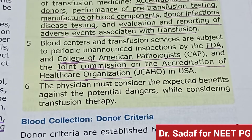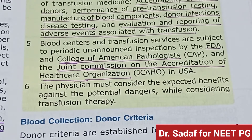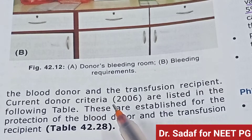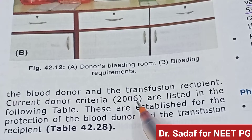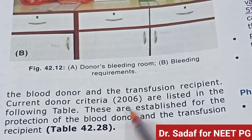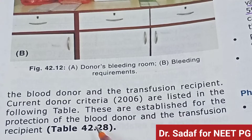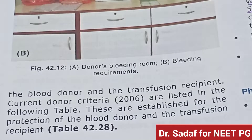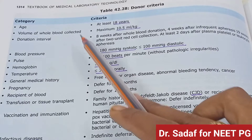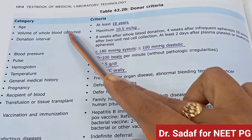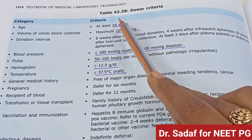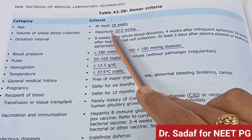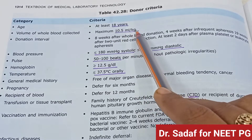Blood collection and donor criteria are established for the protection of the blood donor and the transfusion recipient. The donor criteria include: age 18–60 years, maximum volume of whole blood collected is 10.5 ml per kg, and donation interval — at least 8 weeks after whole blood donation.